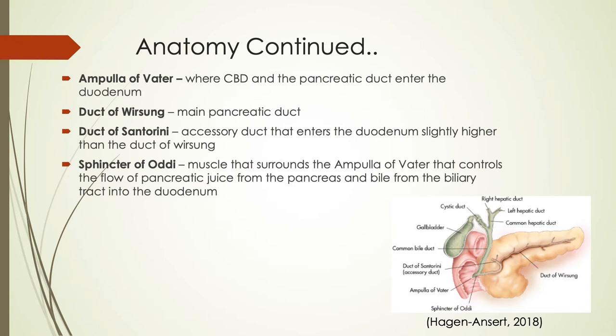The ampulla of Vater is where the bile duct and the pancreatic duct enter the duodenum. The duct of Wirsung is the fancy name for the main pancreatic duct. The duct of Santorini is an accessory duct that can enter the duodenum slightly higher than the duct of Wirsung. The sphincter of Oddi is the muscle that surrounds the ampulla of Vater and controls the flow of pancreatic juices and bile from both the pancreas and the biliary system.